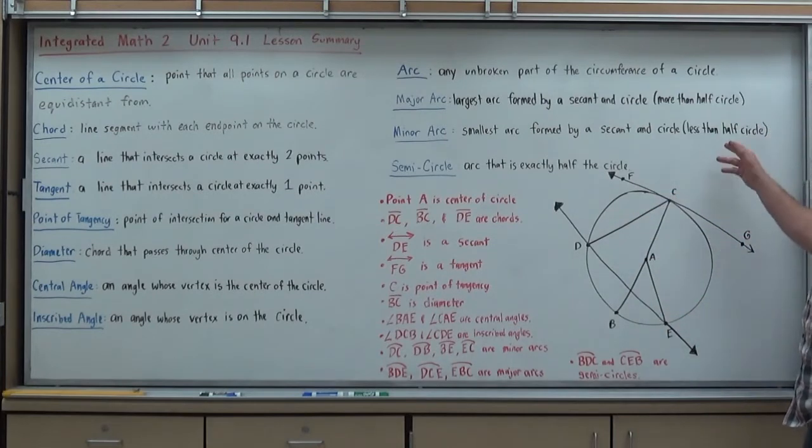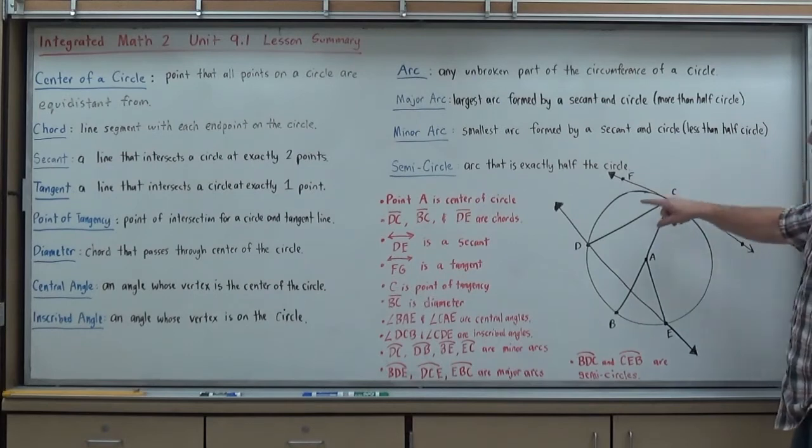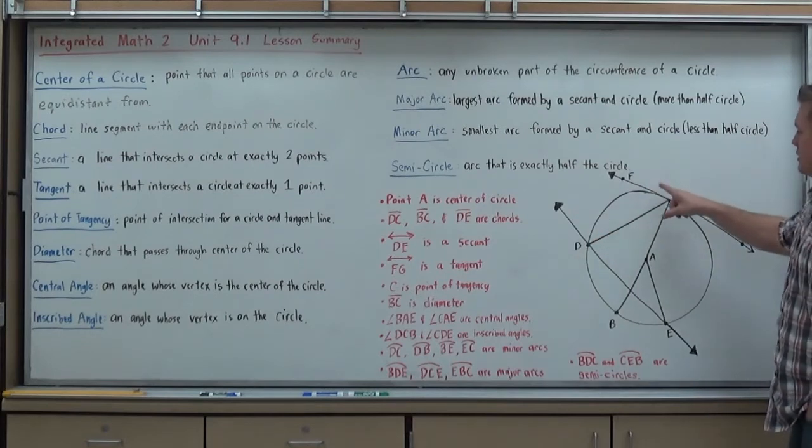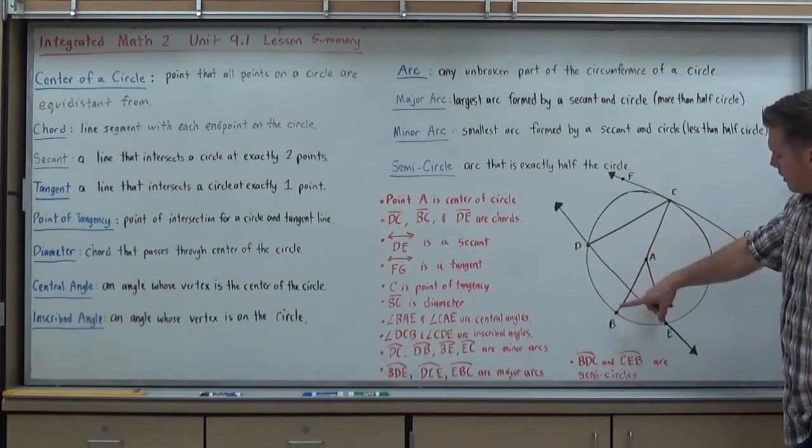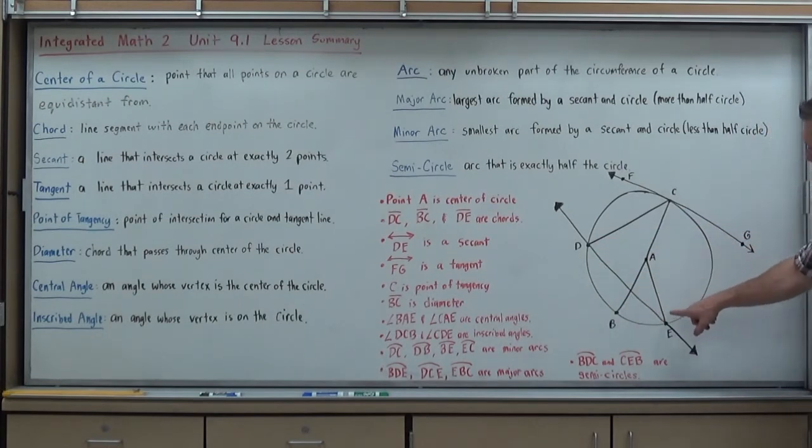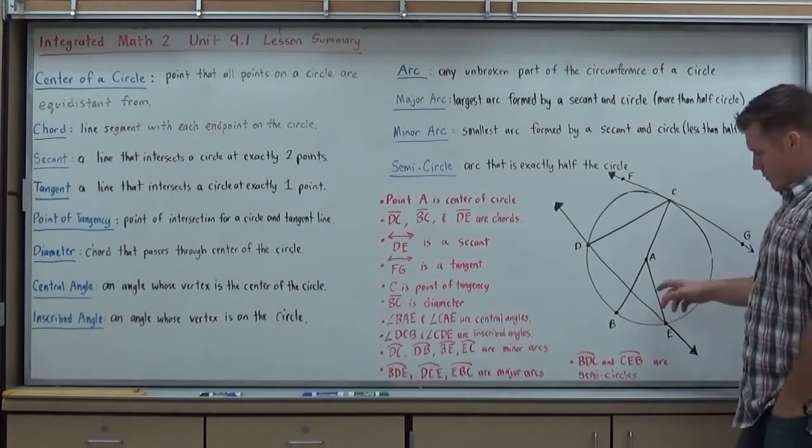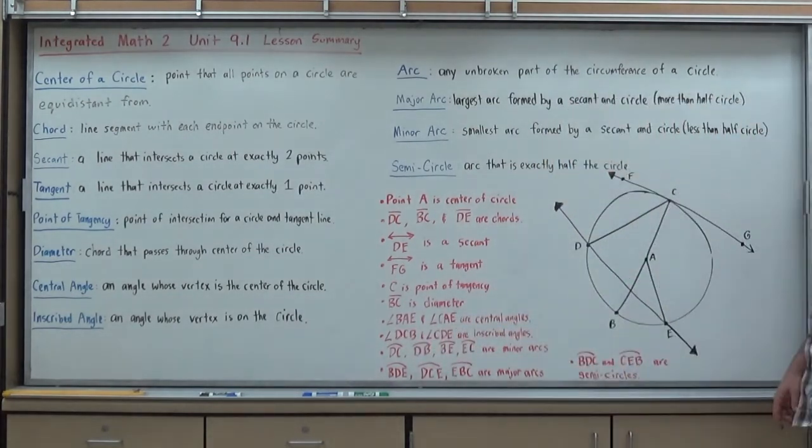Minor arcs, inversely, will be then ones that are less than half the size of the circle. So DC is a minor arc, DB is a minor arc, BE is a minor arc, and EC is a minor arc. And that's why those tend to usually only use two variables to describe them.